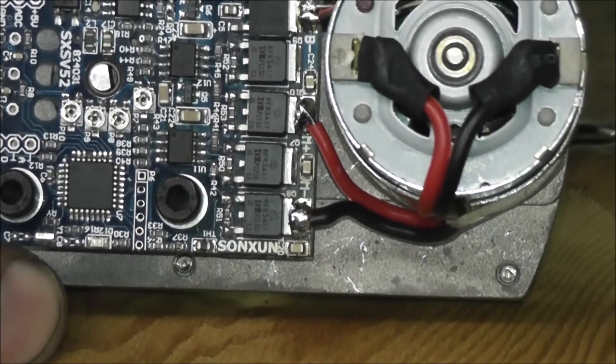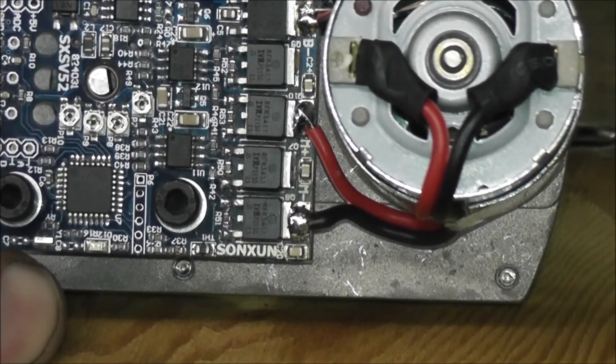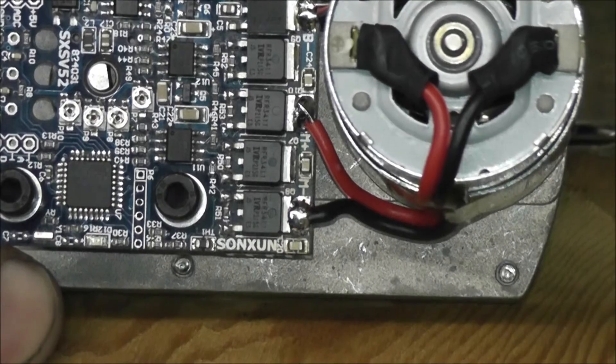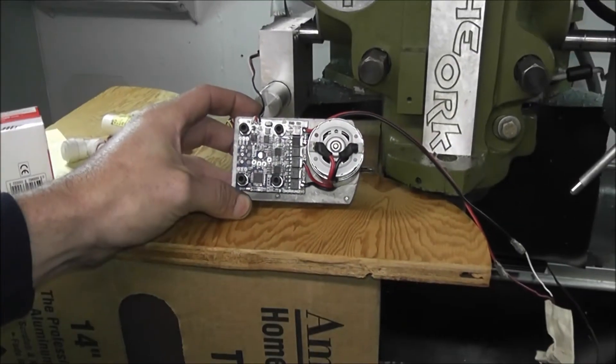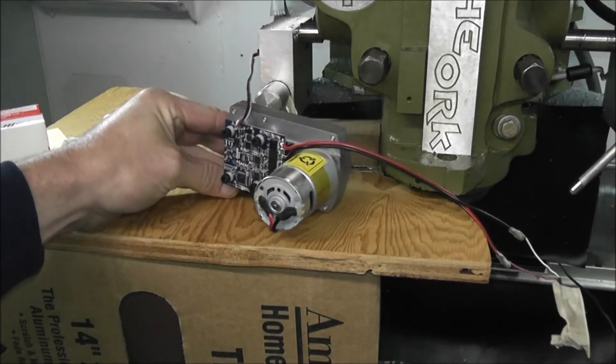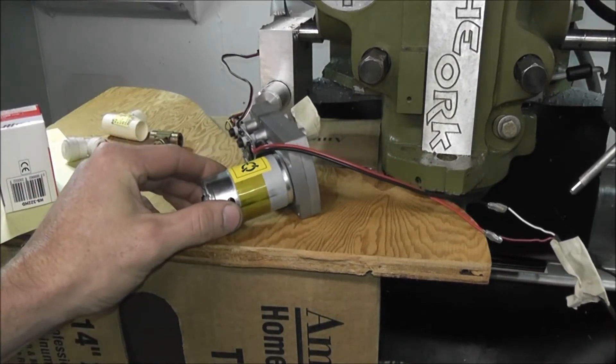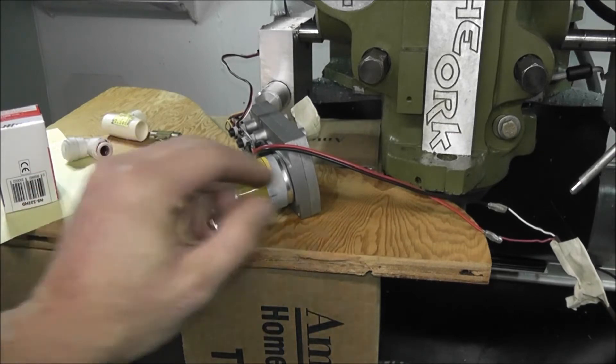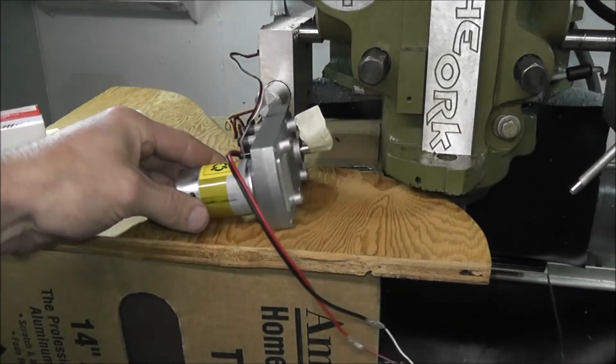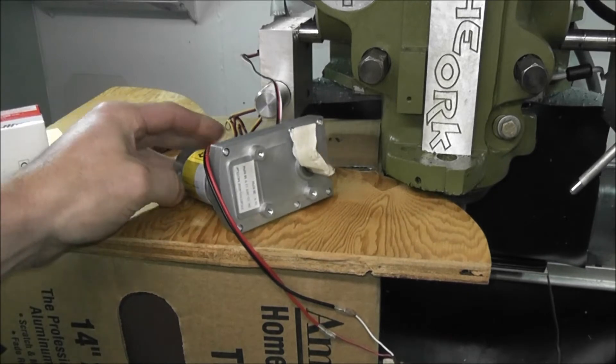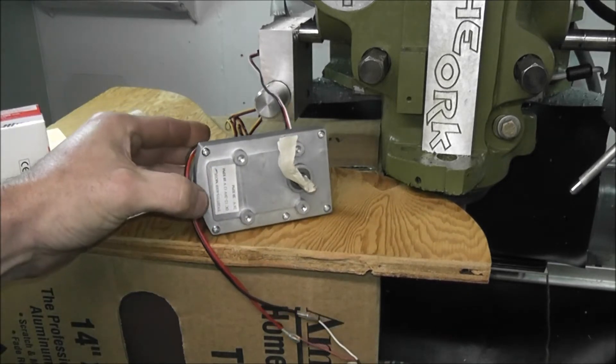The model is SXSV52 and this is rated at 80 kilograms per centimeter, which comes out to like 1,102 inch ounces. So this thing has monster torque.